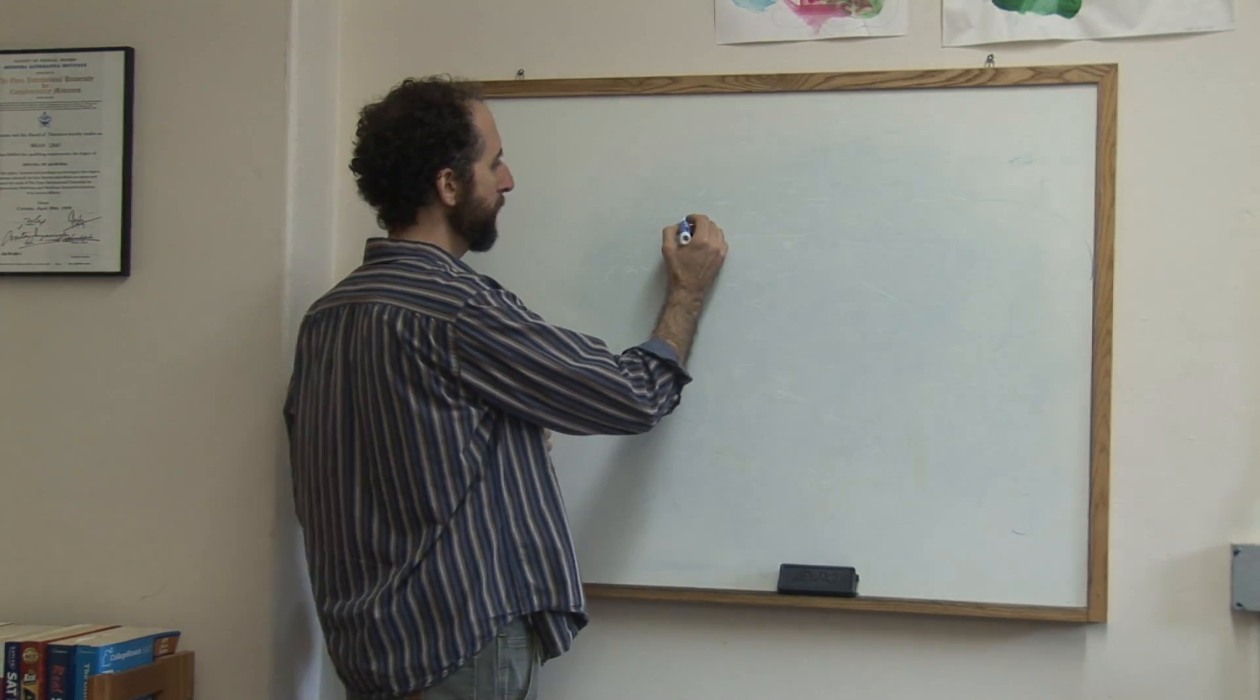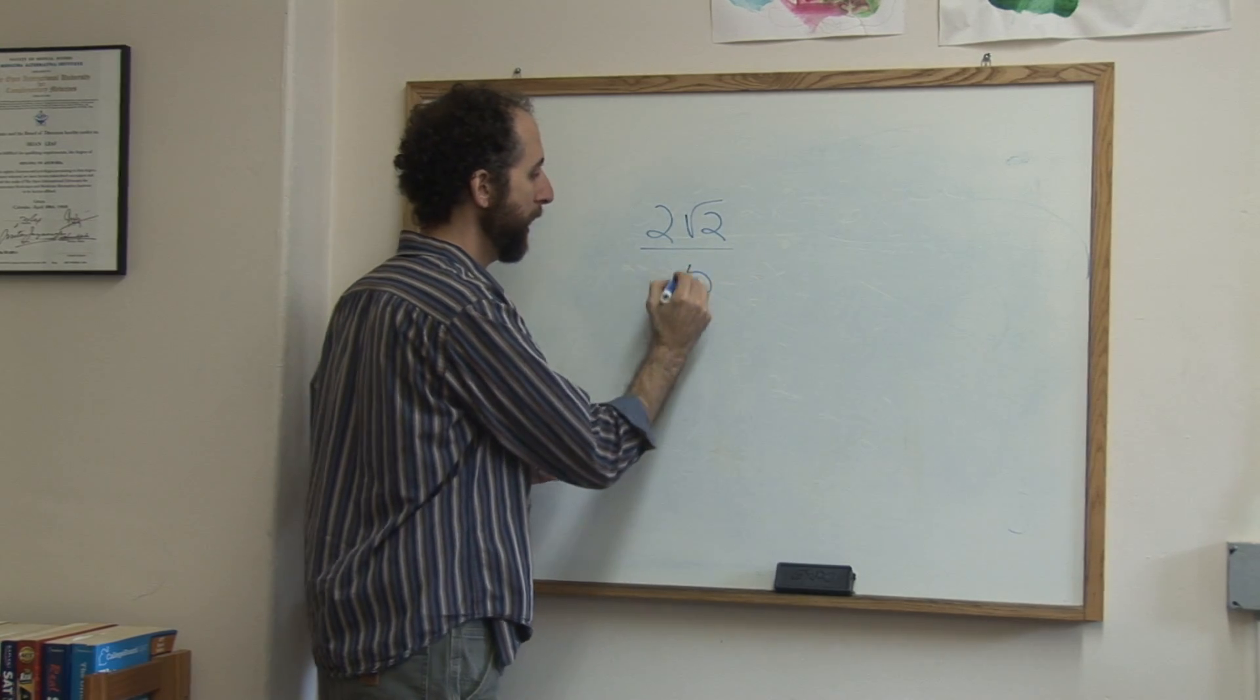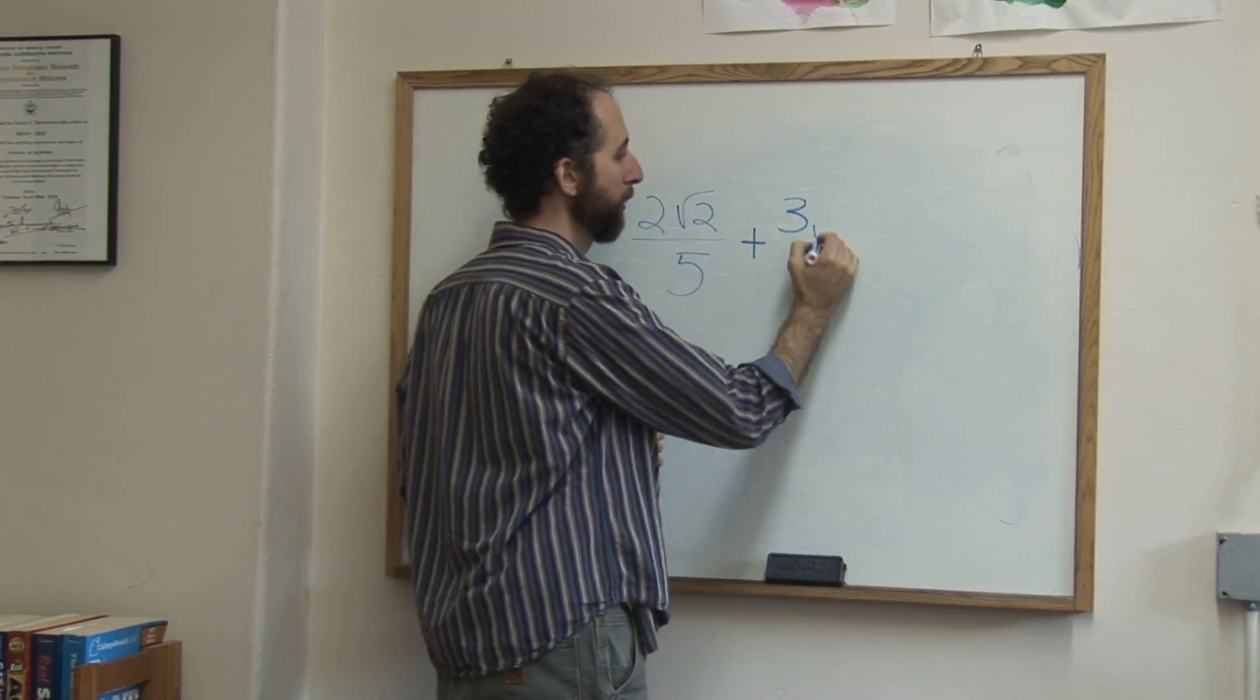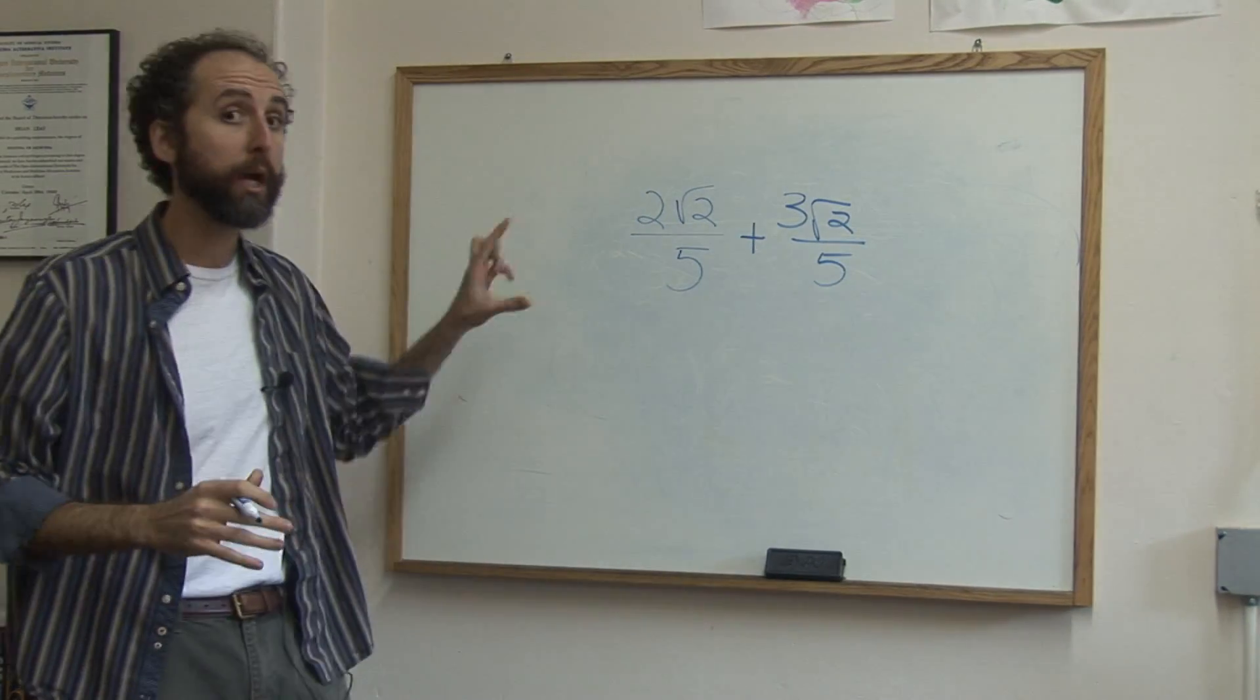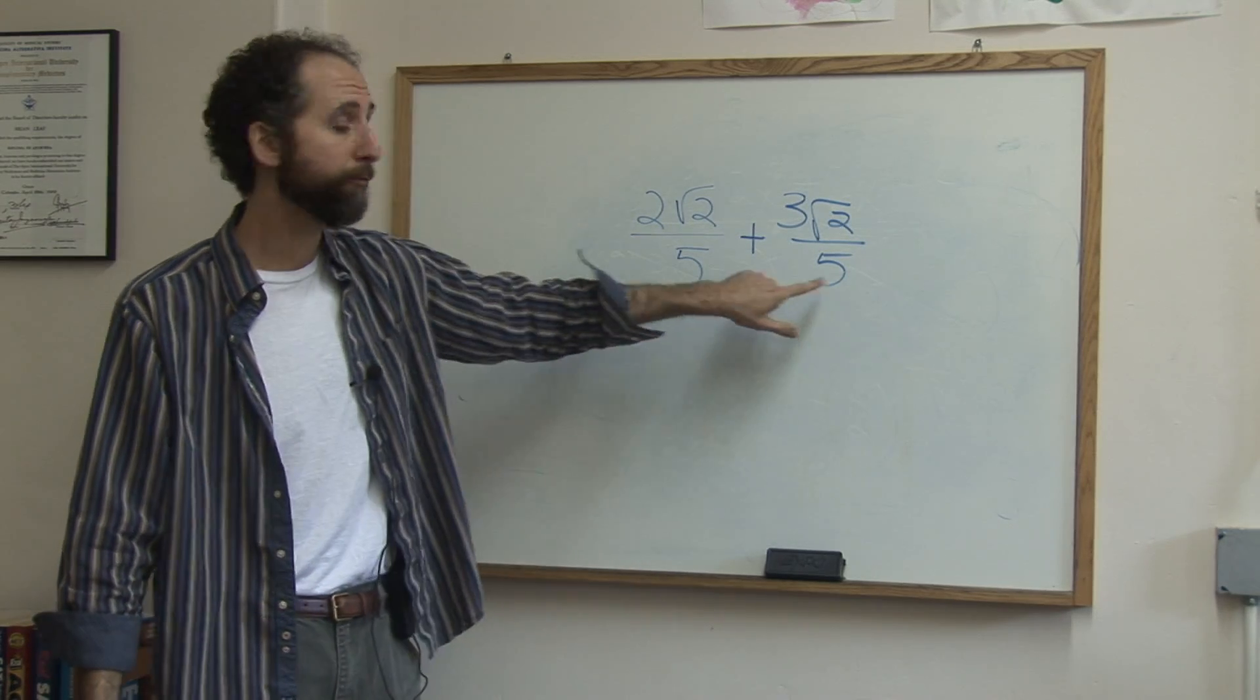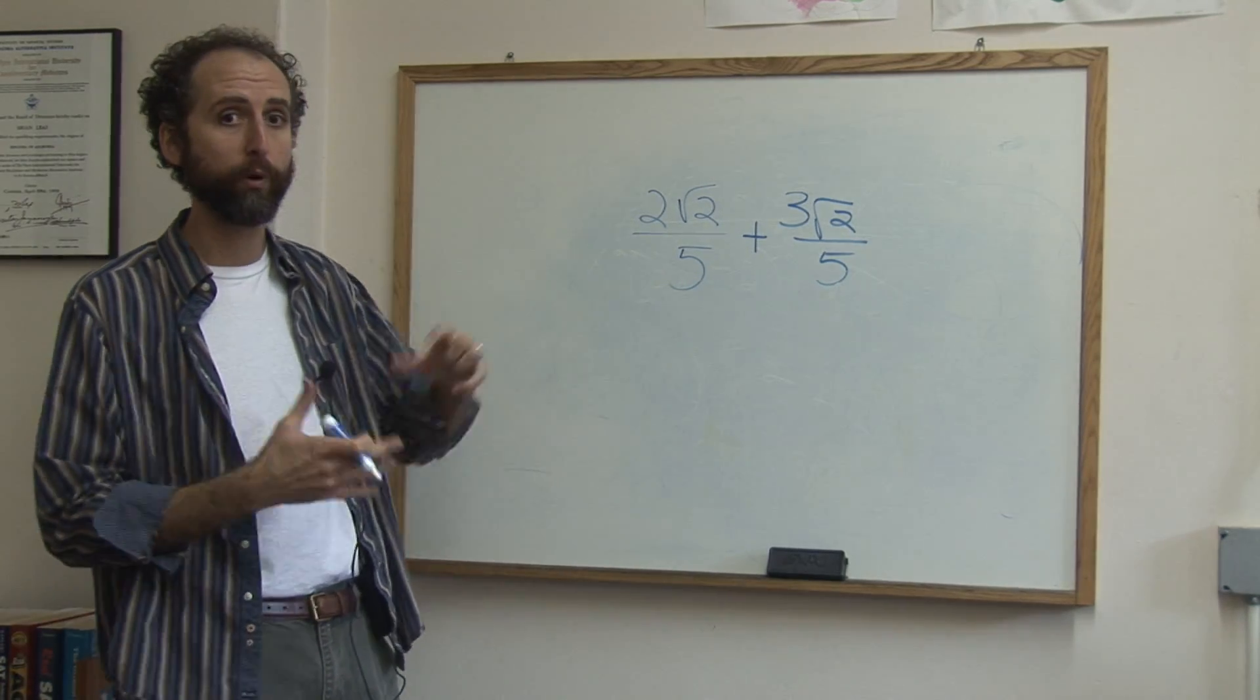Let's say you've got two square root of two over five plus three square root of two over five. So there's a lot going on here which makes it seem confusing to some people but it's really not. It's still just normal adding of fractions. In this case I made it so that the denominators match so we don't even need to work that.